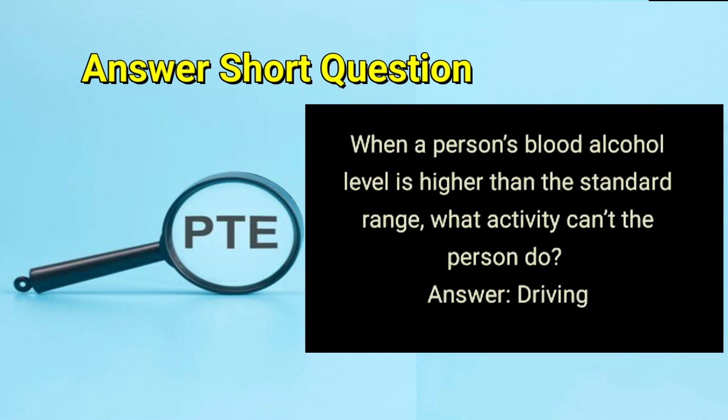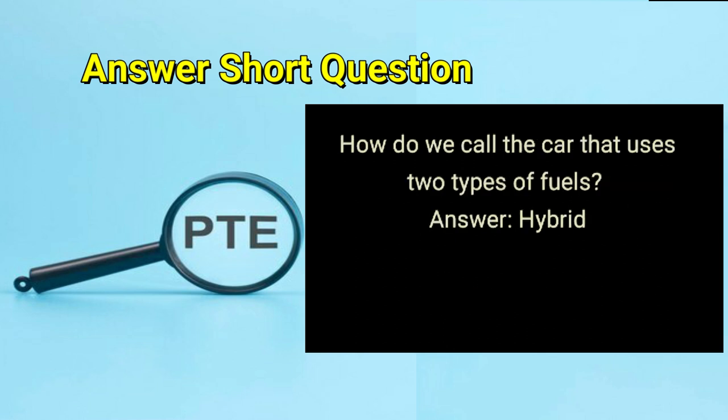When a person's blood alcohol level is higher than the standard range, what activity can't the person do? Answer: driving. How do we call the car that uses two types of fuels? Answer: hybrid.